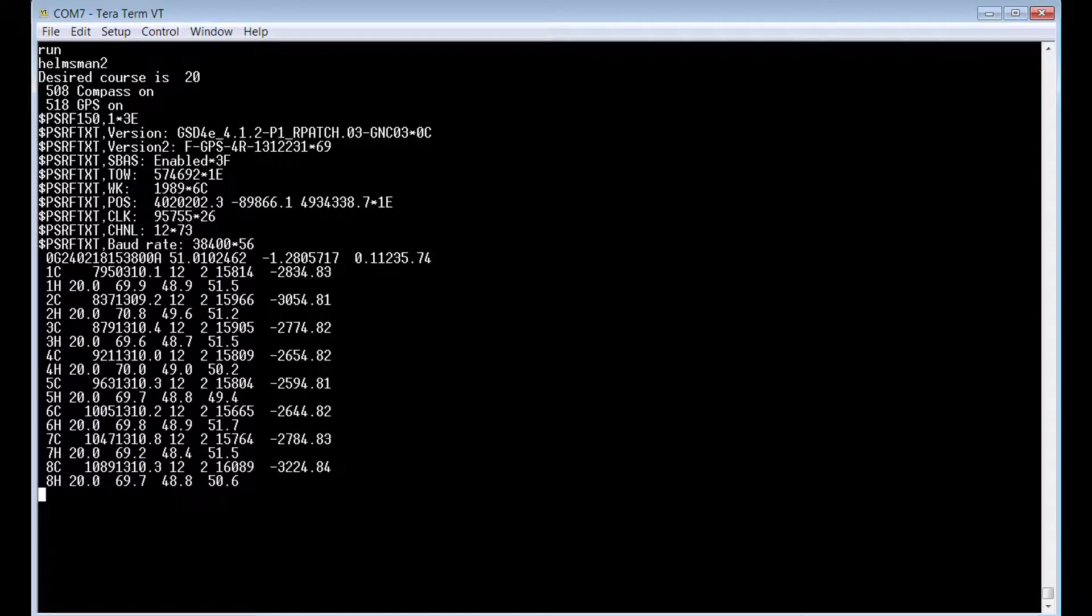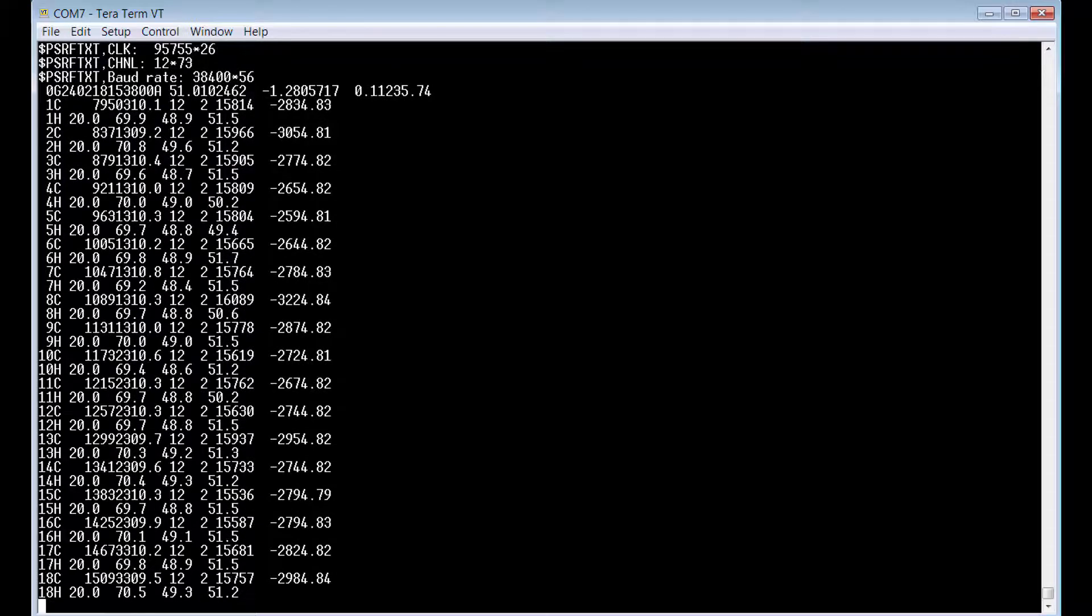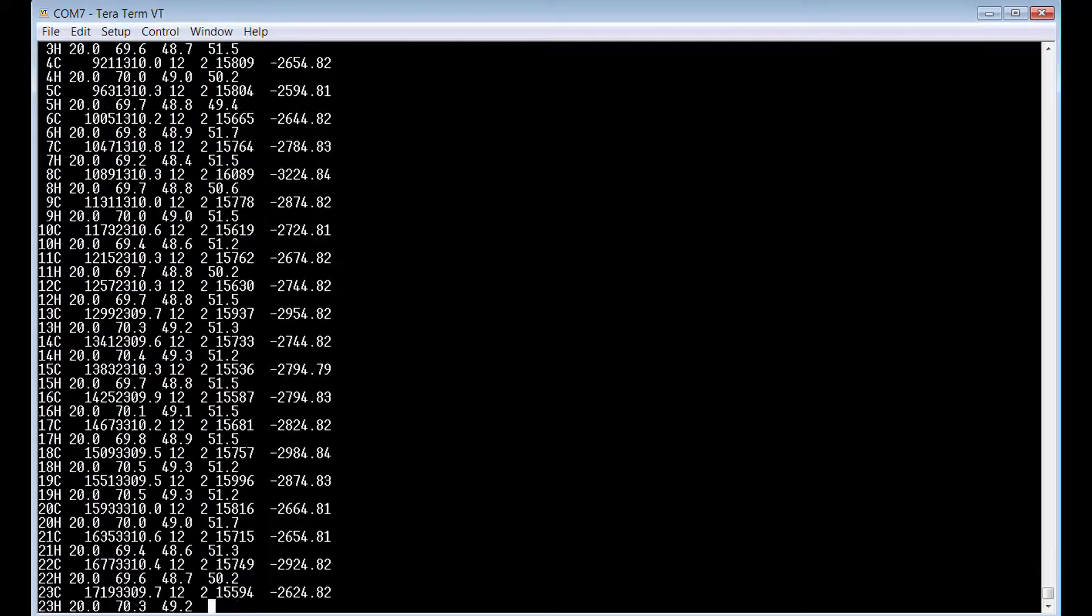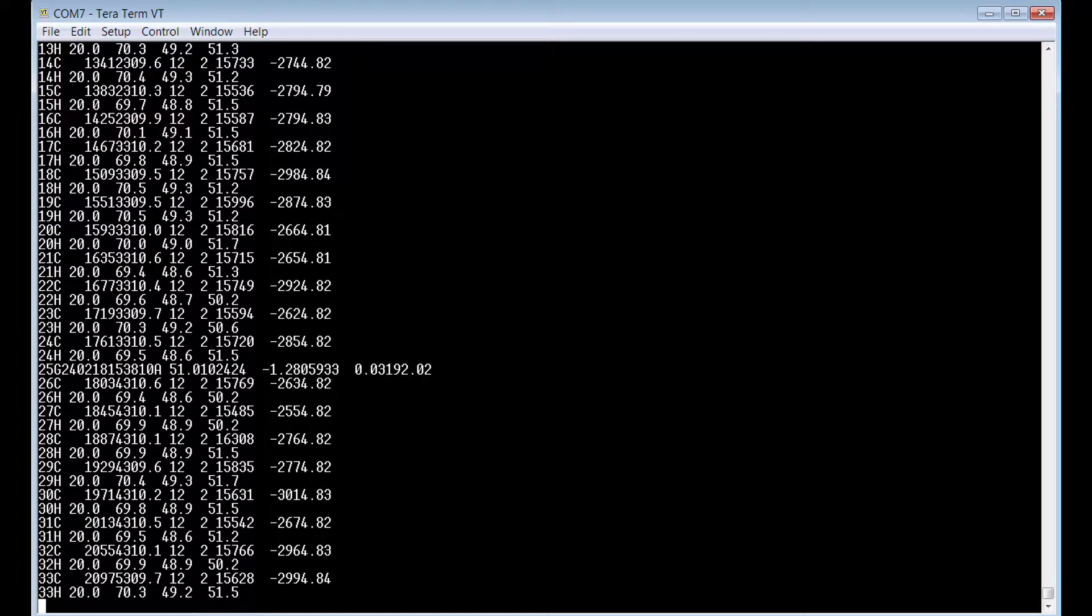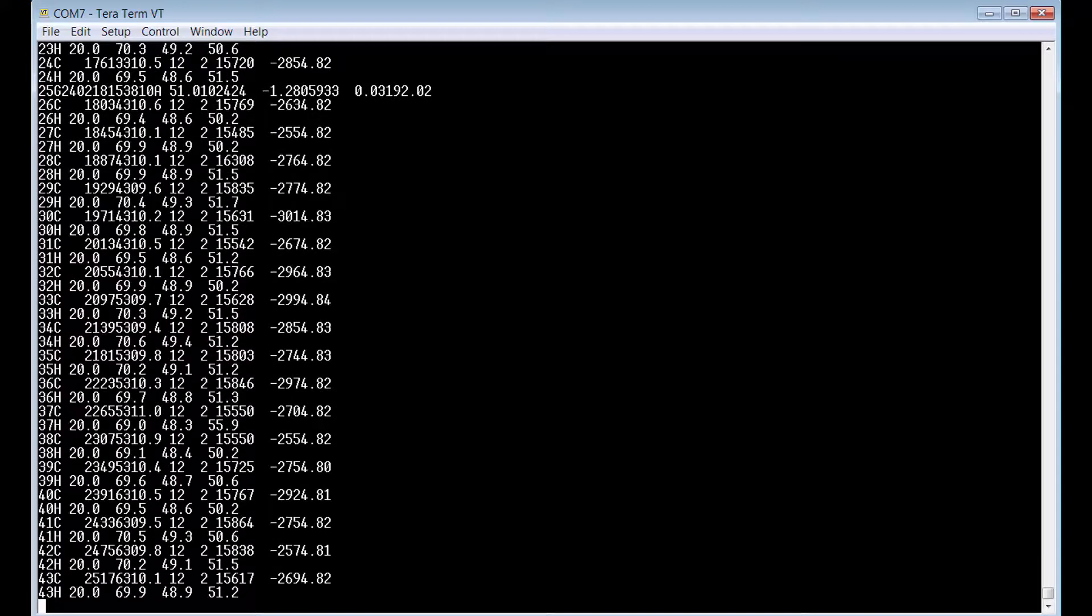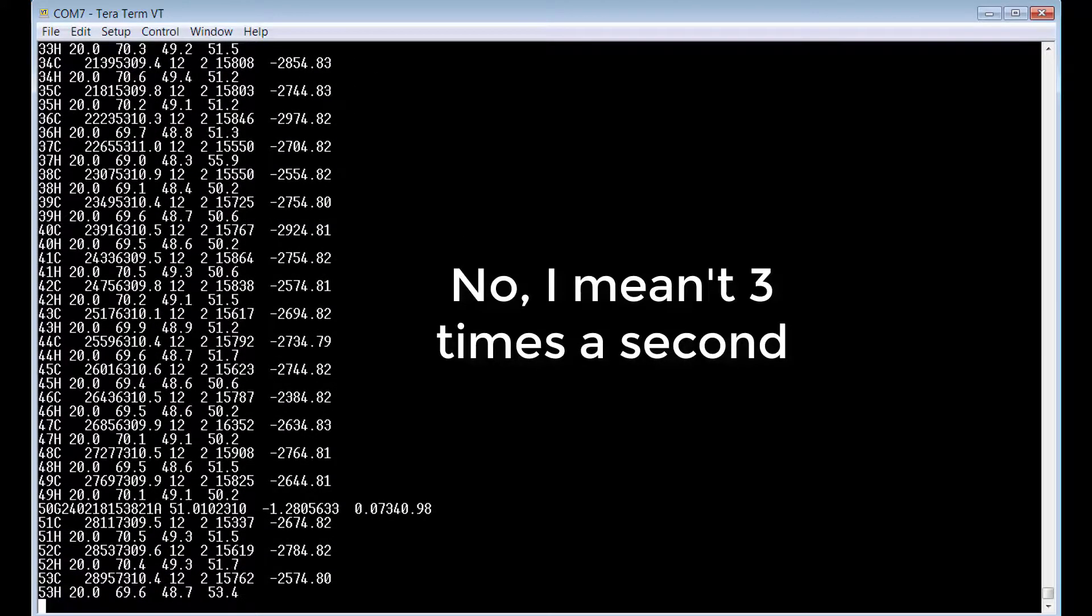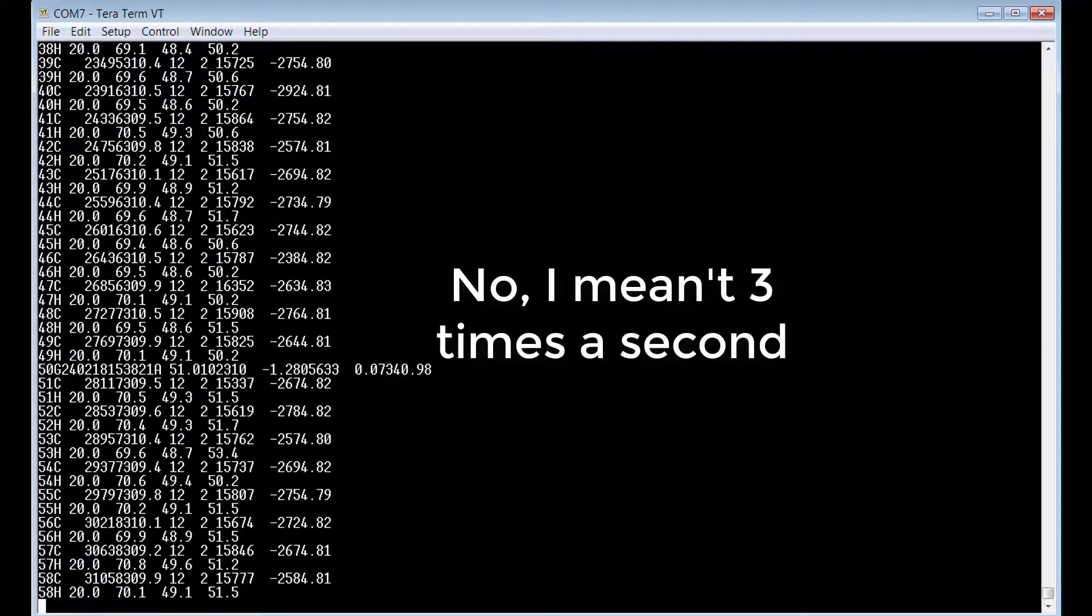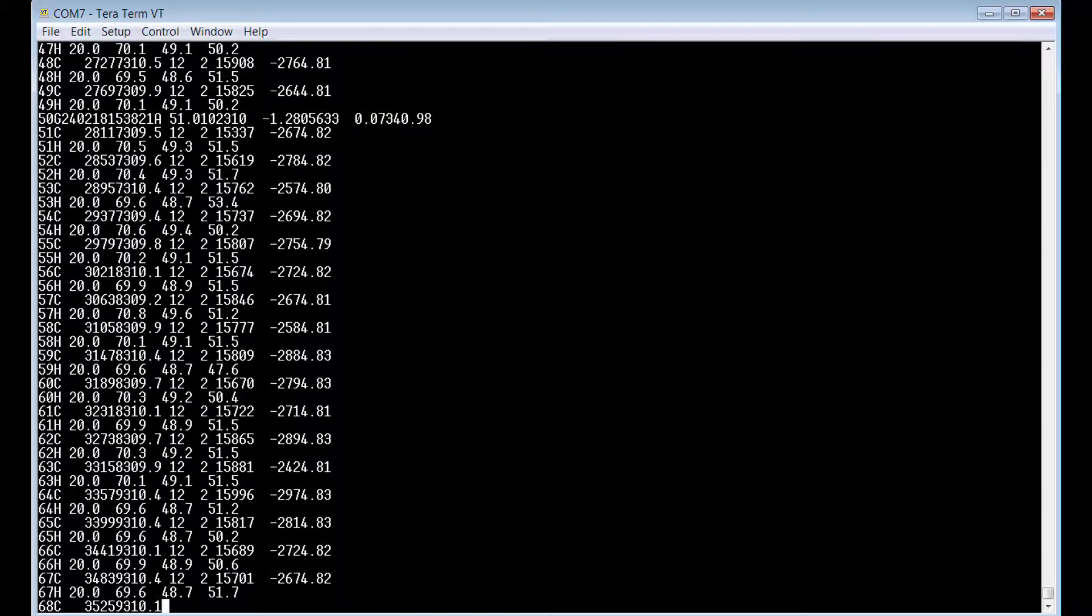Now, we've got a sequence number here which increments once for every pair of lines that's coming out. The C line is from the compass and the H line is from the Helmsman software. And they come out, those two lines, once every second. And every ten seconds you get a G line, which is the GPS. So that's how it should look.